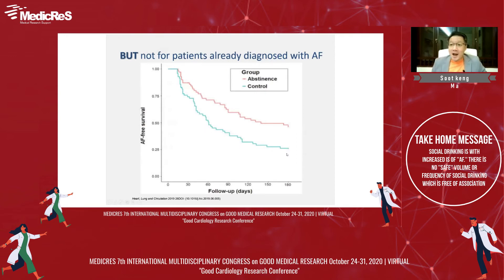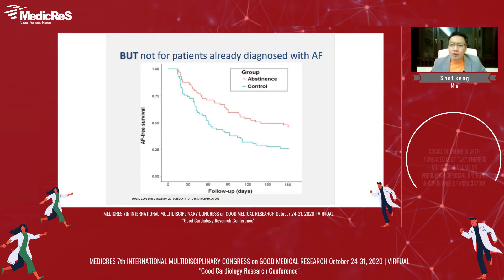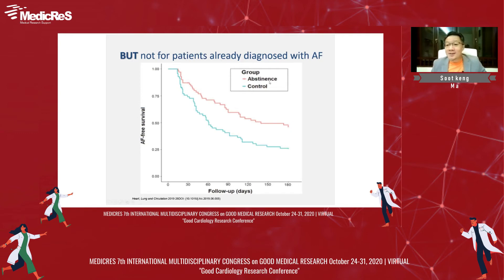But I must say a big BUT here. You cannot use this model of decreased cardiovascular mortality for those patients who have already been diagnosed with AFib. According to this paper, total abstinence is the way — you cannot have alcohol if you have already developed AF. Total abstinence versus control: total abstinence has far better AFib-free survival. That is a very strong dataset.